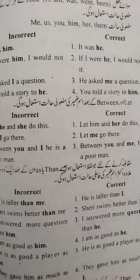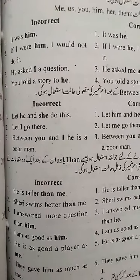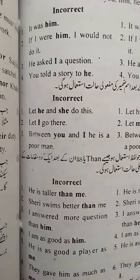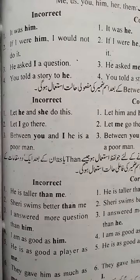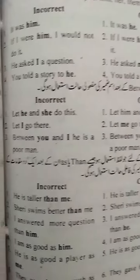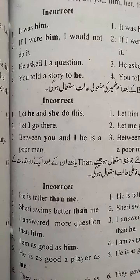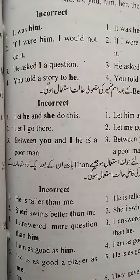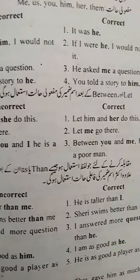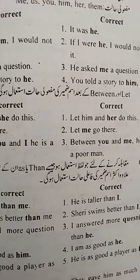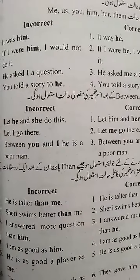Clear? Let or between ke baad hamesha hum objective case condition istamal karte hain. See, there are three incorrect sentences that we need to convert into the correct form. The first one is 'let he and she do this.' Let ke baad he or she ka isma nahin karte hain — this is incorrect use. The correct form is: 'let him and her do this.' Let ke baad him aega or her aega; he or she nahin aata hain.